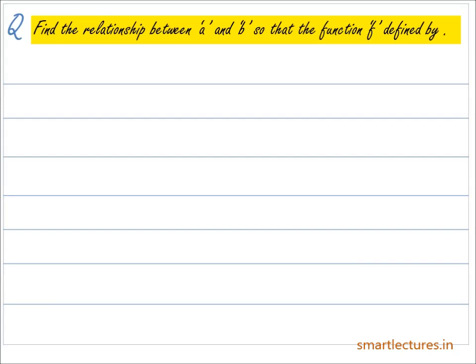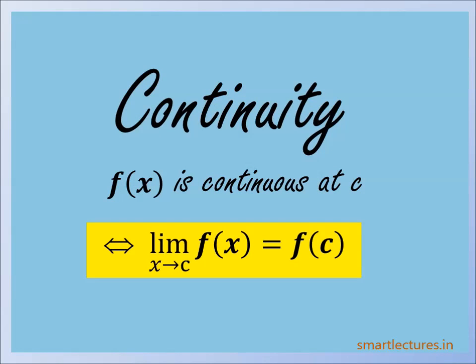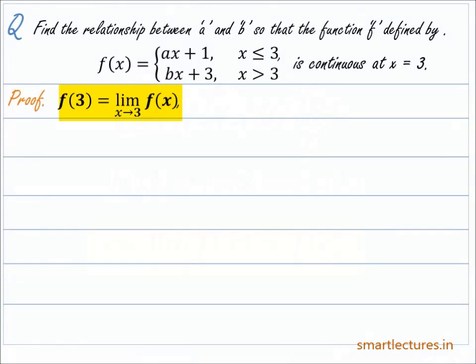Now let's solve one more question. Find the relationship between a and b so that the function f defined by f(x) = ax + 1 if x ≤ 3 and f(x) = bx + 3 if x > 3 is continuous at x = 3. A function is continuous at a point if and only if the value of the function equals the limit at that point, so f(3) must equal the limit of f(x) as x approaches 3.